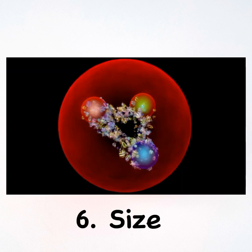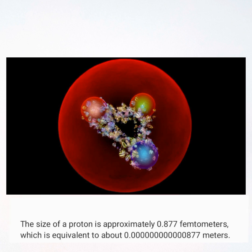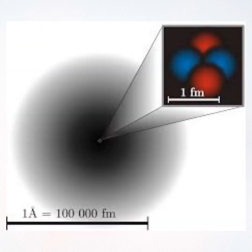6. Size: the size of a proton is approximately 0.877 femtometers, which is equivalent to about 0.0000000000000877 meters. The atom's diameter is on the order of tens of thousands of times larger than the diameter of a proton.